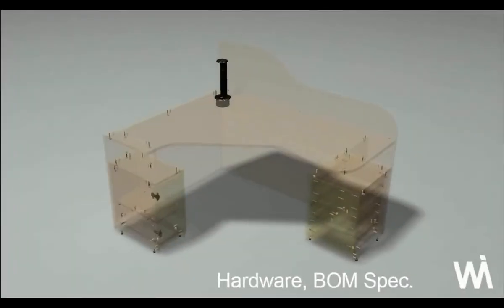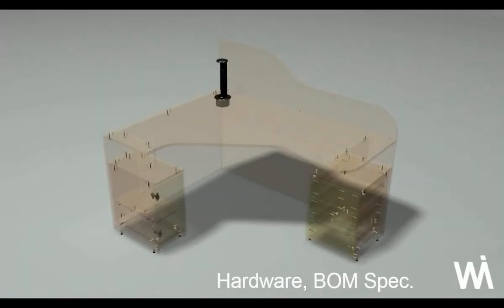Another key area customers find challenging is placing hardware. A lot of companies leave it up to the production department to work out how parts are going to be jointed once the design is created. For those that have gone down the CNC route, that's unacceptable — you've got to define all screw positions and hole information up front so the part can be read directly into the CNC software and processed.